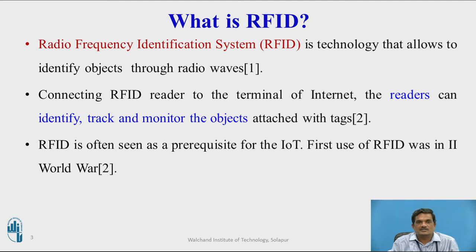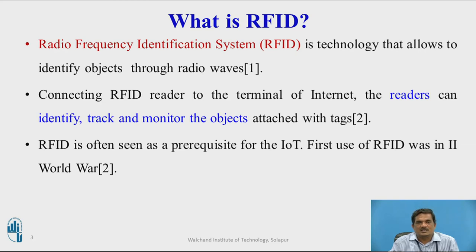Radio Frequency Identification System is a technology that allows identifying objects through radio waves. Usually, in an IoT system, the objects work coordinately in order to gather, process, and transmit data to the central system. In order to work cooperatively, each object should identify each other. Objects or devices in IoT systems have an identification number, but that identification number should be read by a particular system, and RFID technology enables reading particular objects in a system.